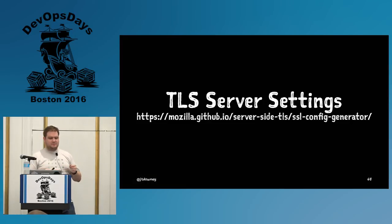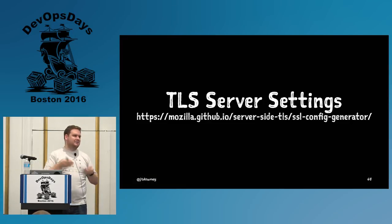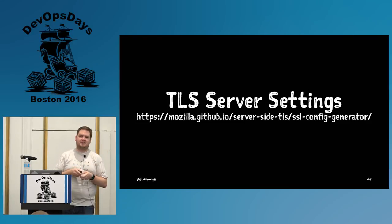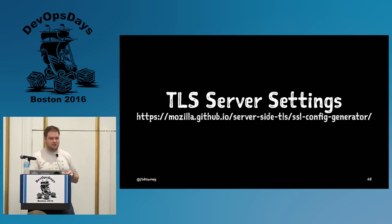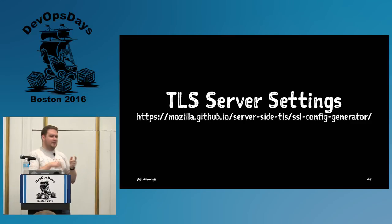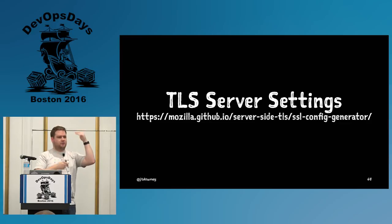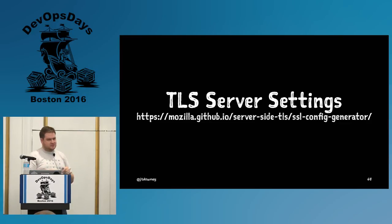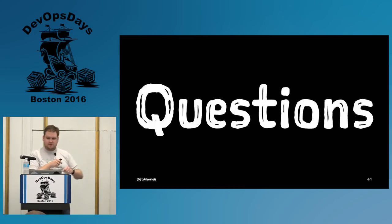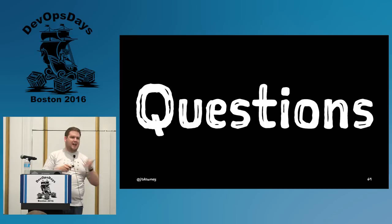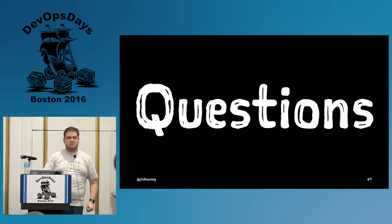If SSL Labs is yelling at you or you don't know how to configure your TLS server, Mozilla has a really great website where you plug in — for example, I'm using Nginx and this version of OpenSSL — and it will dump out the config file with their recommendations. They have really great options. With that, I'll take a few minutes of questions. Thank you.